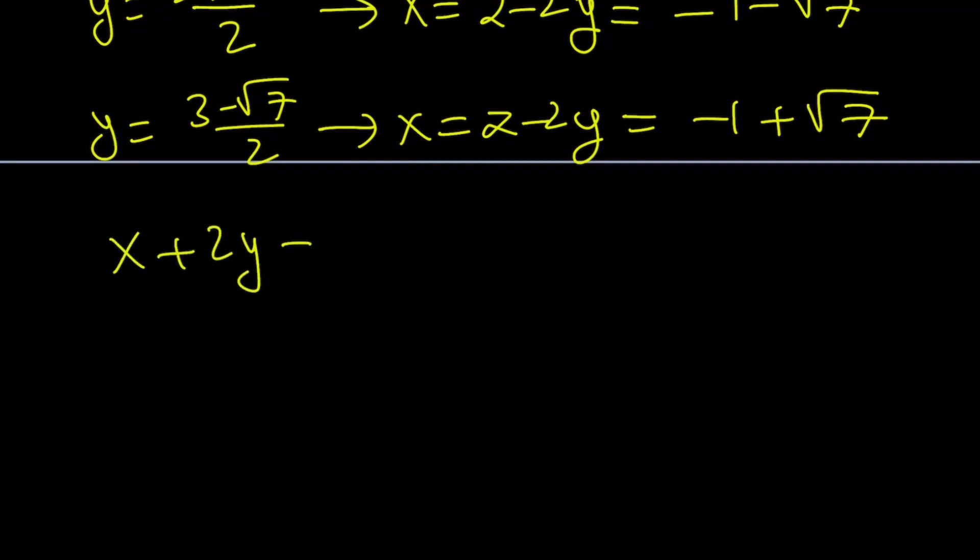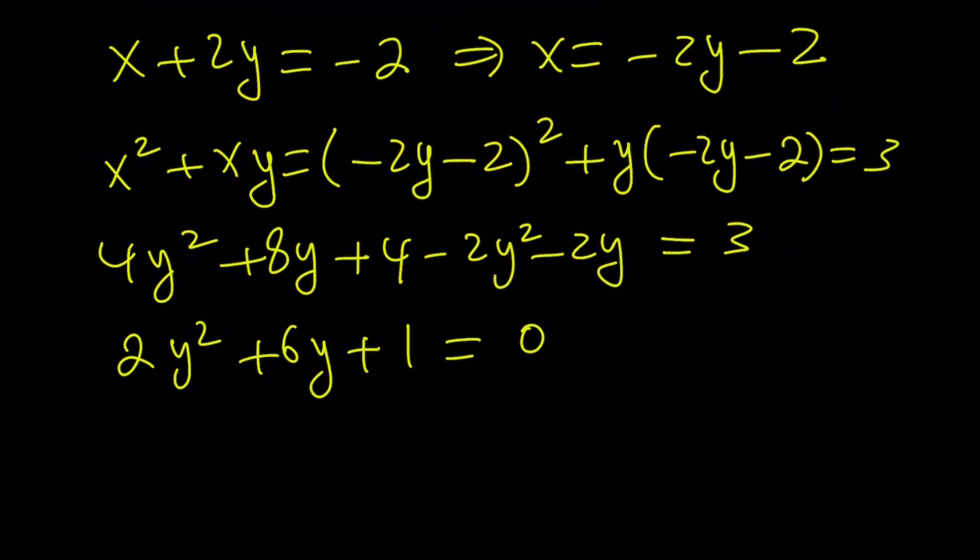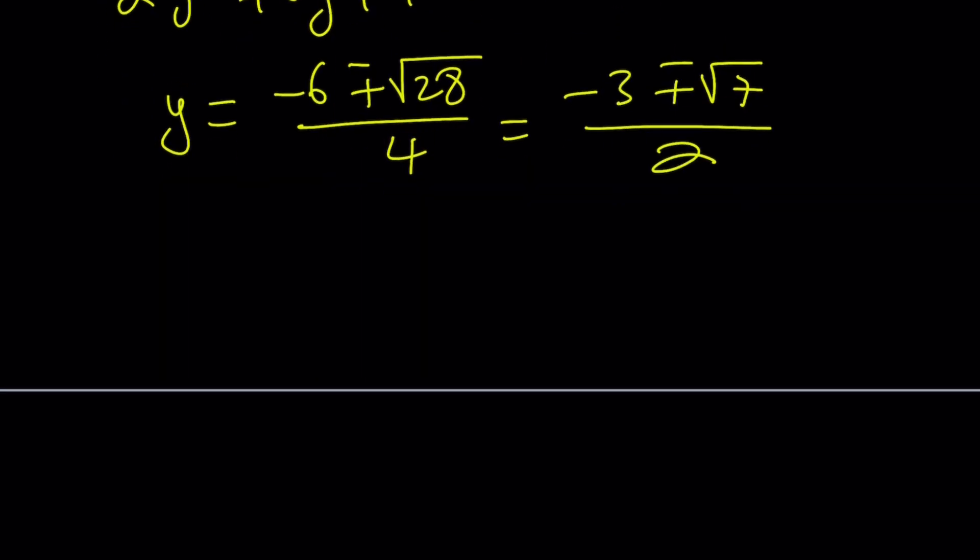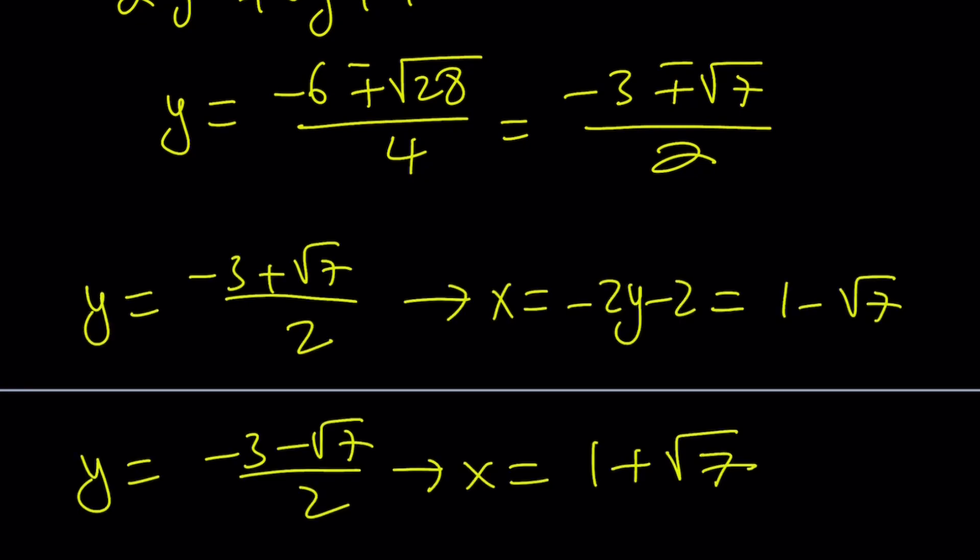x plus 2y can also be negative 2. And from here we can write x as negative 2y minus 2, and substitute into the first equation. And we get this quadratic equation. Using the quadratic formula, we get the solutions. Now by plugging in these values, we can find the x values. So those are going to be the x values.